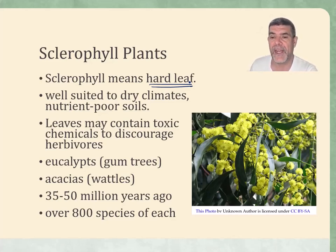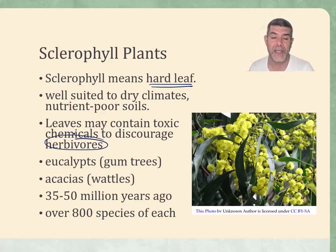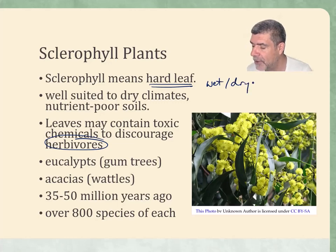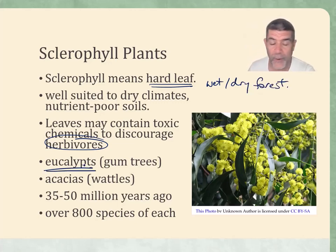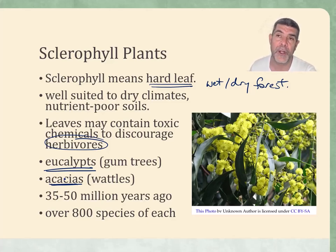We also see some very specific adaptations, especially amongst the eucalypts, to the inclusion of toxins or toxic chemicals that can discourage herbivores — something specifically designed to help protect the plant from being eaten by a range of different types of herbivores. Two of the species we would probably most associate with sclerophyll, and these are the plants that dominate our wet and dry forests, are the eucalypts or gum trees, and also the wattles or acacias.